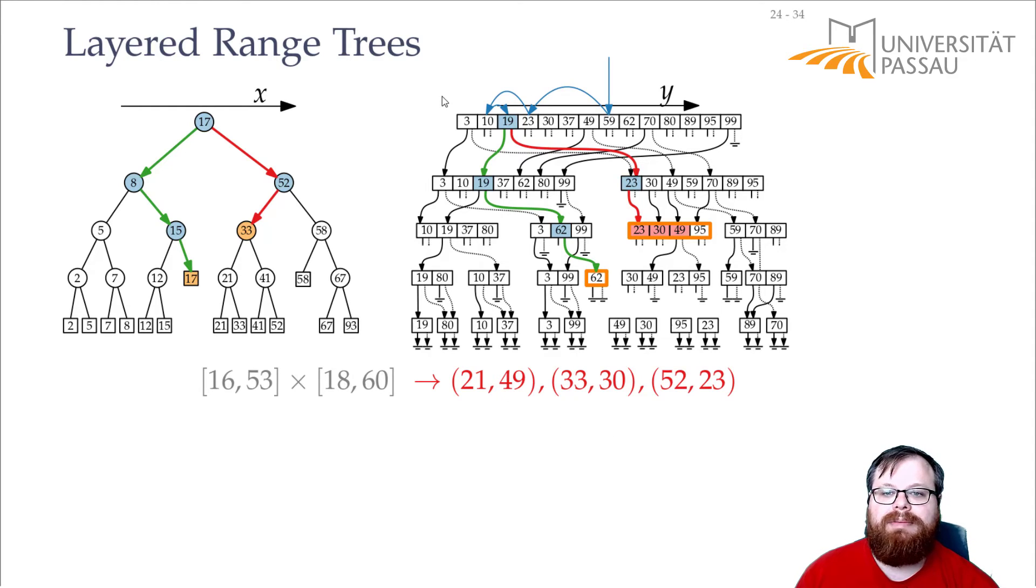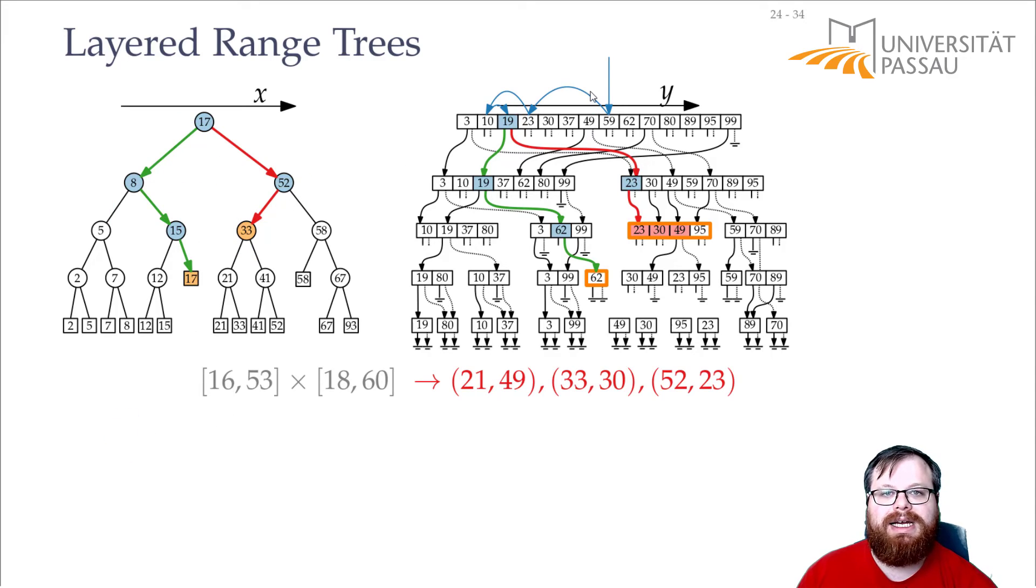So, instead of doing a binary search on each of these levels, we only do a binary search in the very beginning for the bottom boundary. And then, take these pointers. So, for the whole second-level query, we only take order of log n time once. And then, we follow the pointers, which takes order of k time. So, for this whole thing, we only need order of k plus log n time. And we don't need the log n for all of these canonical sets. But only exactly once. And then, we get a running time of order of k plus log n.